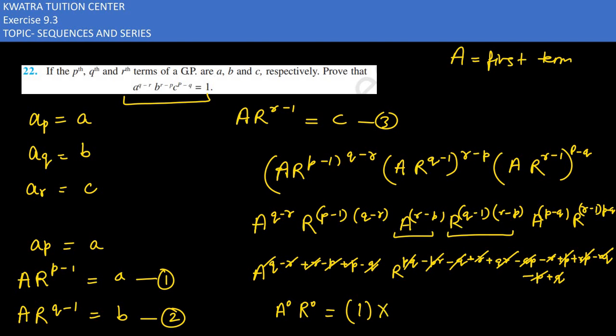So what does this mean? 1 to the power 0 is 1. R to the power 0 is 1. 1 times 1 is nothing but 1, which equals the right-hand side. Thank you.